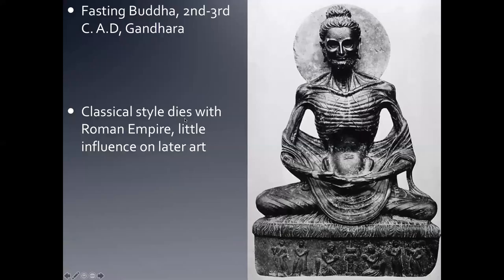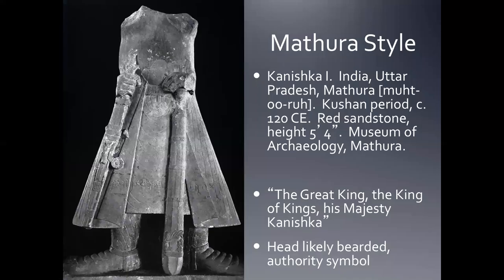This is the Fasting Buddha — there's a really good example at the Detroit Institute of Art. The classical Greco-Roman style dies with the Roman Empire and has little influence on later art. Instead, we see a South Asian style develop in Buddhist art. The Mathura style comes first. This is Kanishka the First — 'the great king, the king of kings, his majesty Kanishka' — likely bearded, an authority symbol. This type of portraiture is more from Kanishka's own cultural tradition.